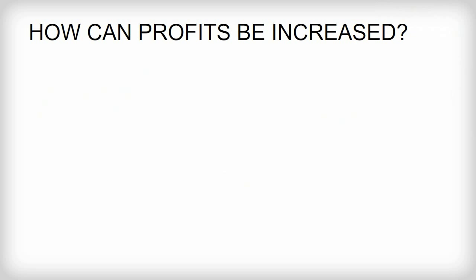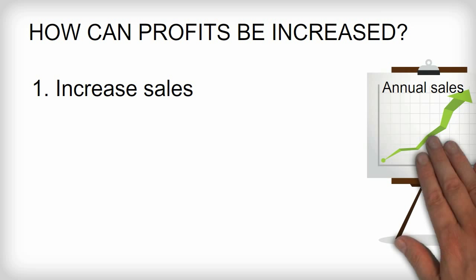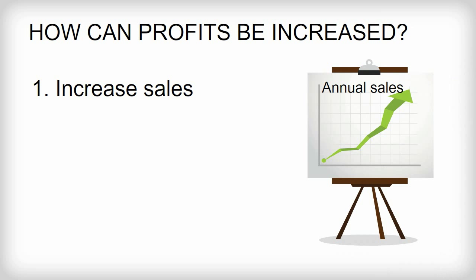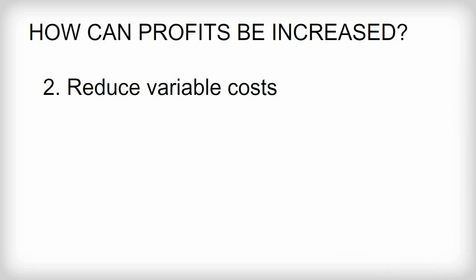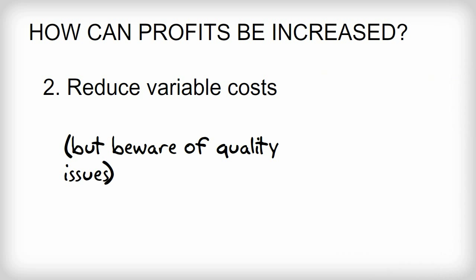How can profits be increased? There are four ways in which a firm can increase its profits. One: increase sales without reducing net profit margin. Sales can be increased by improving existing products, launching new products, or more effective promotion. Two: increase net profit margin by reducing variable cost per unit. Be careful here — if variable costs are reduced by simply using cheaper materials or components, this could reduce the quality of a product and its reputation. On the other hand, it may be possible to reduce variable labour costs without affecting quality. One way of doing this is by increasing the level of automation used in production.